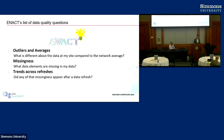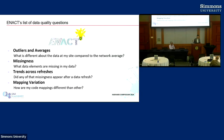And then trends across refreshes. ENACT sites don't have real-time data from the EHR — sites refresh their data every month or so. When you refresh that data, there's always room for errors to be introduced. Maybe your source data pipeline changed and your process to extract the data no longer works quite right, and perhaps all of your procedure data disappears. That actually did happen in another data network — an entire domain of data just disappeared. So that's another important thing that's worth flagging.